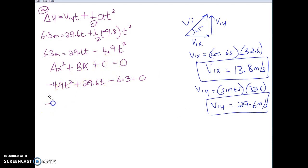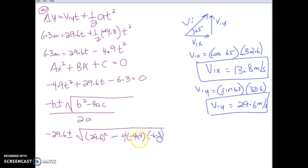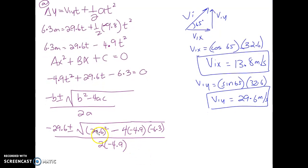We're going to do quadratic, of course. Negative b plus minus square root of b squared minus 4ac divided by 2 times a. So negative b is negative 29.6t plus minus 29.6t squared minus 4 times negative 4.9 times negative 6.3 divided by 2 times negative 4.9. So 29.6, what do you get squared?